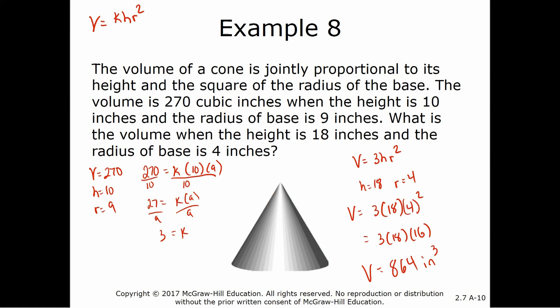So start by finding k, use k, or start by finding the variation equation, then find k using the information you're given, and then plug that in and solve for the final remaining variable that you're actually looking for.